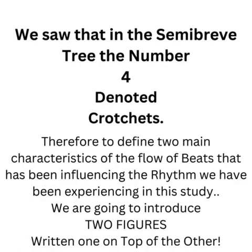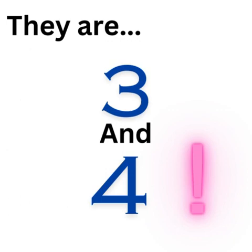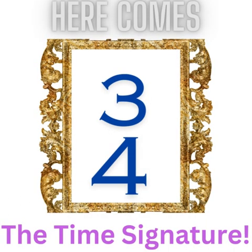We saw that in the semibreve tree the number 4 denoted crotchets. Therefore, to denote two main characteristics of the flow of beats that has been influencing the rhythm we have been experiencing in this study, we are going to introduce two figures written one on top of the other. They are 3 and 4. The time signature called 3/4 is born. The top figure tells us that there are three crotchets in a bar. The bottom figure tells us that the kind of beats in the bar are crotchets.